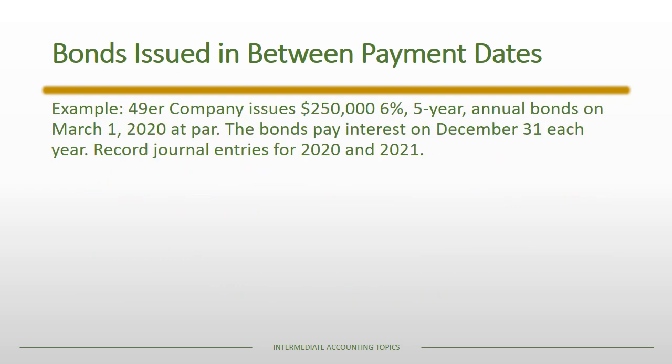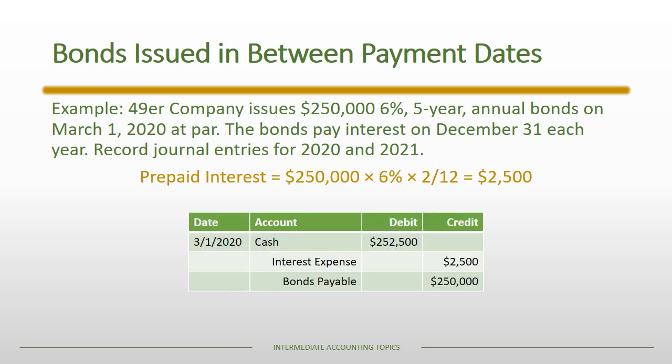The company issues a $250,000 six percent five-year annual bond. The issuance takes place on March 1st, 2020. The bonds are issued at par, but in this case the bonds pay interest on December 31st, so the issue date and the interest payment date don't match up. There will be prepaid interest as part of this bond issuance — specifically two months of interest that accrued in January and February prior to the bondholder making the purchase.